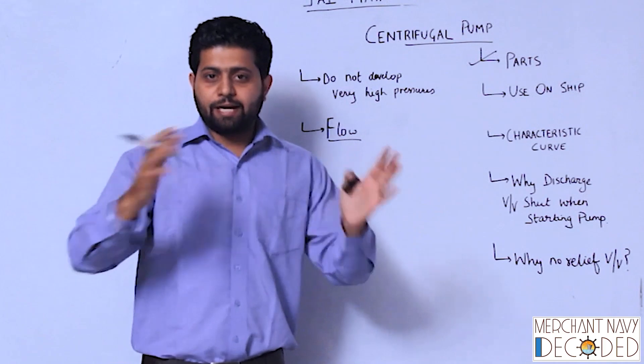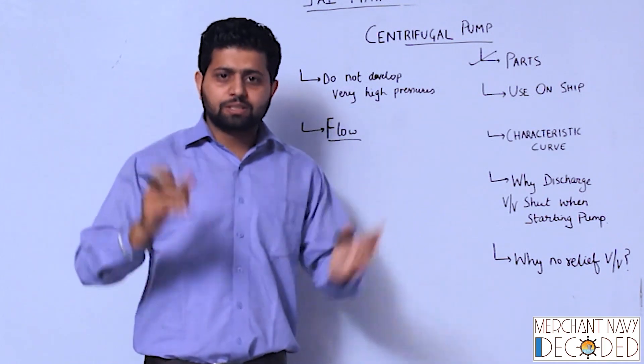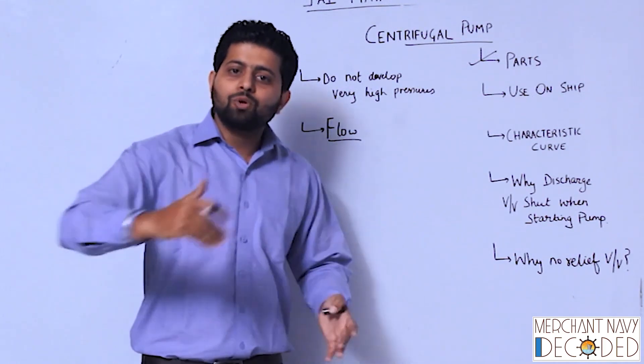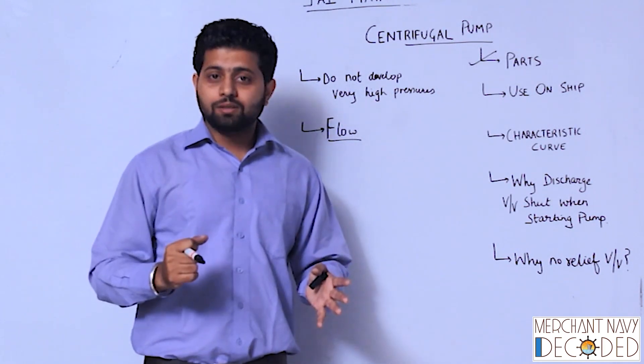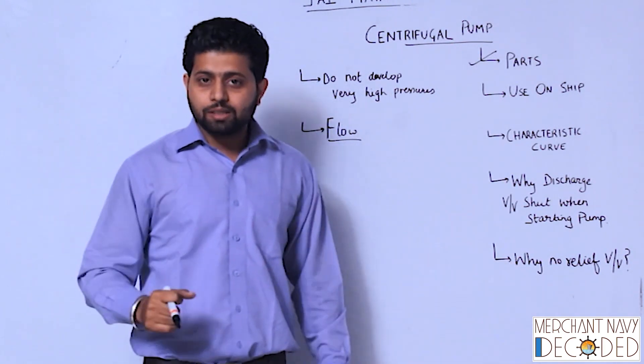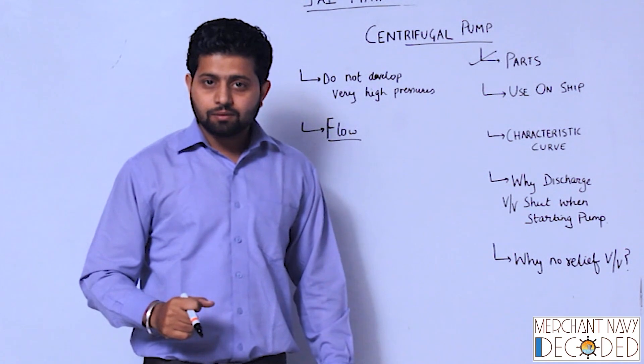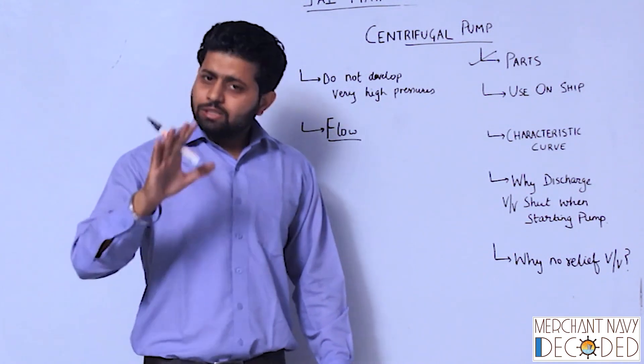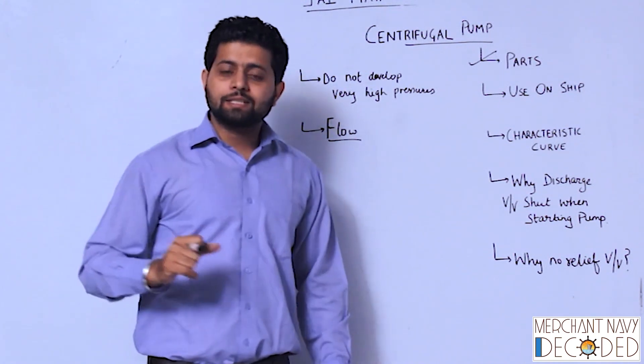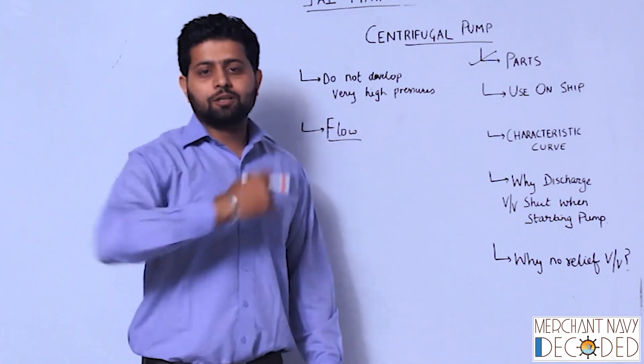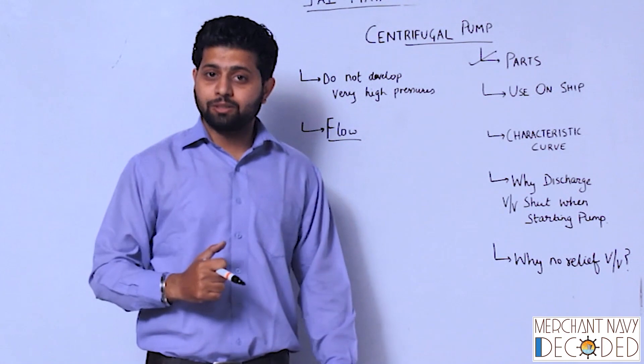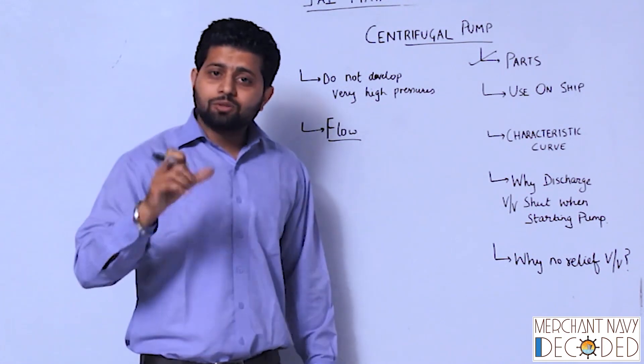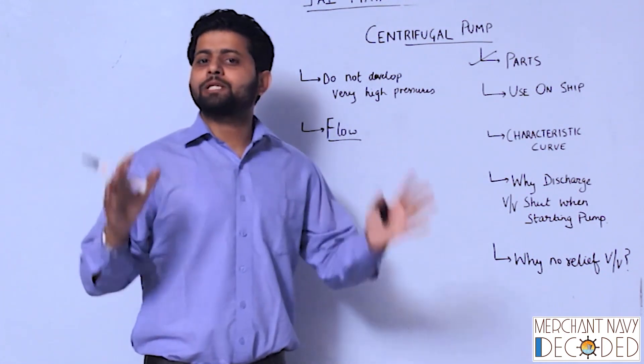There is a jacket fitted around the liner, which we are going to discuss in IC engines, where cooling water flows. This cooling water should be large quantity. For example, in earlier days we used to use sea water for cooling this main engine jacket, generator jacket, where the combustion is taking place. Over there to dissipate heat, you do not need a lot of pressure.